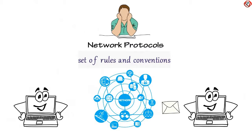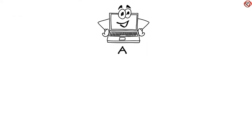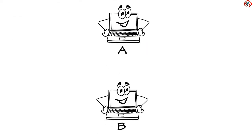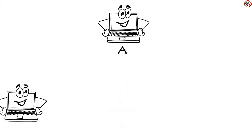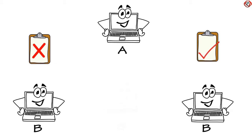Same is the case with computers. To transfer a file effectively, computers should follow some set of rules and conventions. Consider Computer A is transferring a movie to Computer B. Consider two cases: first, when they are not following a set of rules and conventions, and second, when they are following a set of rules and conventions.